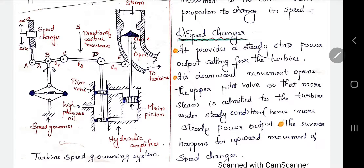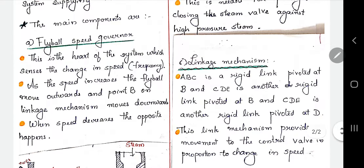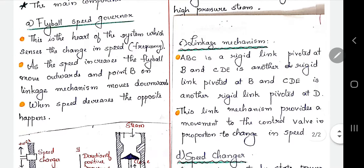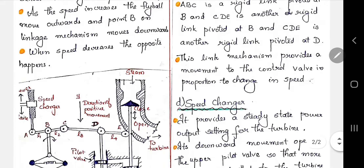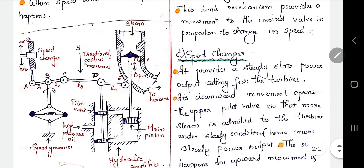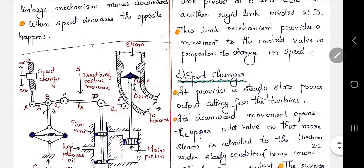The flyball speed governor is the heart of the system, which senses the change in speed. Whenever there is any change in speed, it is detected by the flyball speed governor. As the speed increases, the flyballs move outwards and point B on the linkage mechanism moves downwards. When speed increases, this starts to rotate — these are the two flyballs — and due to this rotation, this linkage mechanism link goes downwards, meaning B moves downward. This is how it starts to control the system.